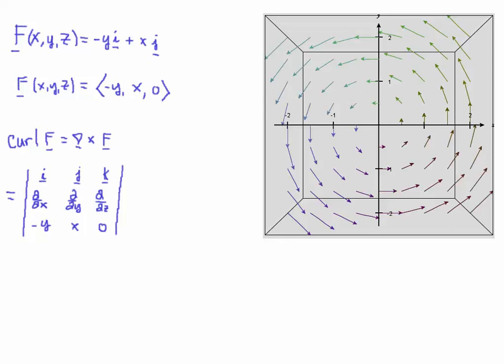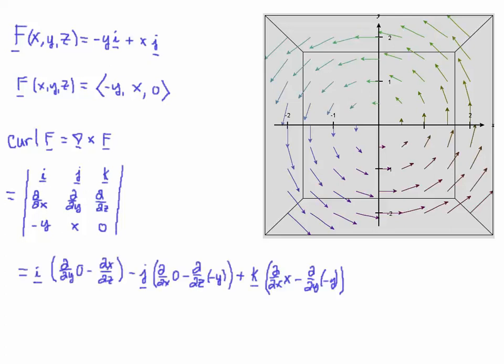And we're going to compute the curl of this vector field. So recall that the curl is the grad cross the vector field. So the mnemonic for that is this determinant. I just put the vector field in the last component and the gradient operator in the second row. And here we go. Just apply the definition.